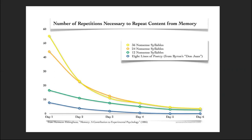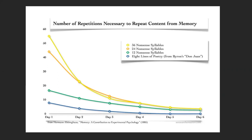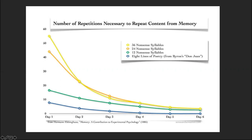In another experiment, Ebbinghaus compared memorizing 12, 24, and 36 nonsense syllables versus eight lines of poetry. Not surprisingly, more syllables took longer to learn, but required fewer repetitions each subsequent day. Eight lines of poetry has far more characters than 36 nonsense syllables, yet he needed far fewer repetitions and had it completely by about day five. Why? Because poetry has context — it's not just random abstract collections.